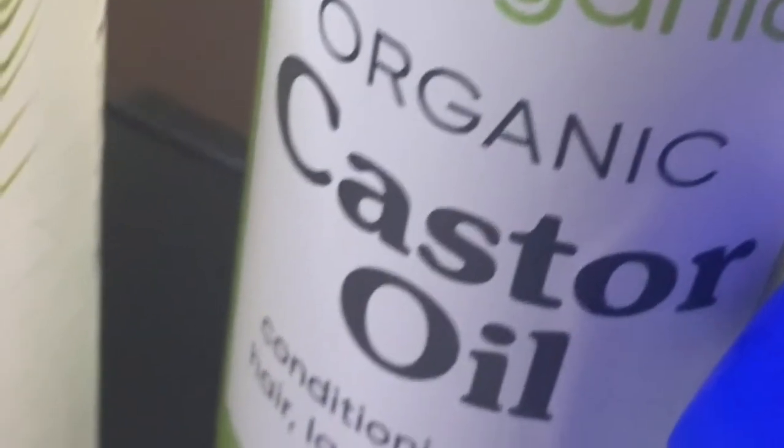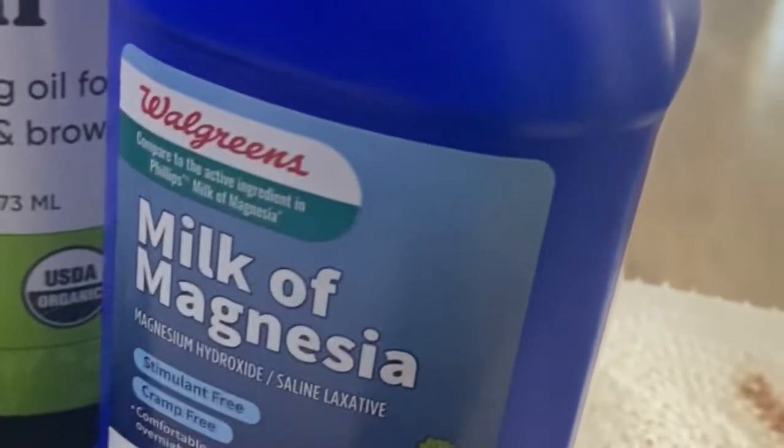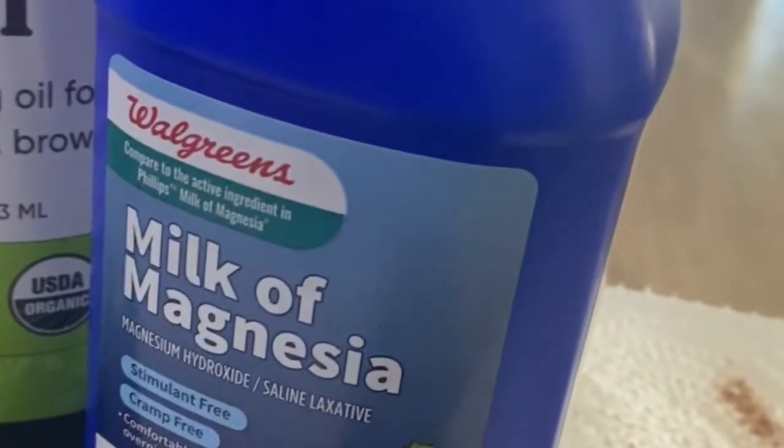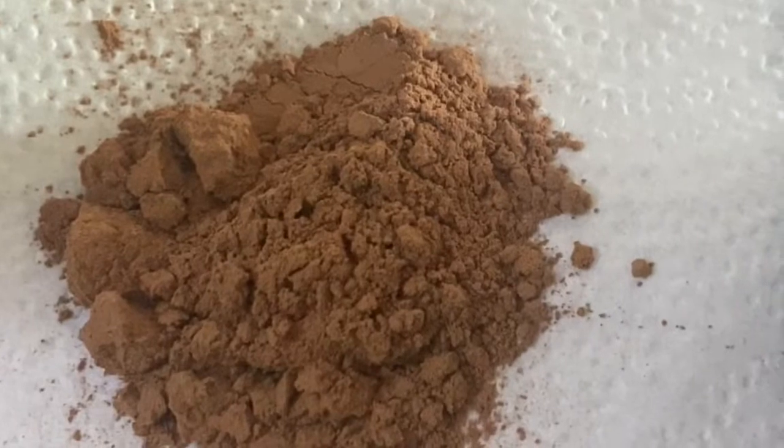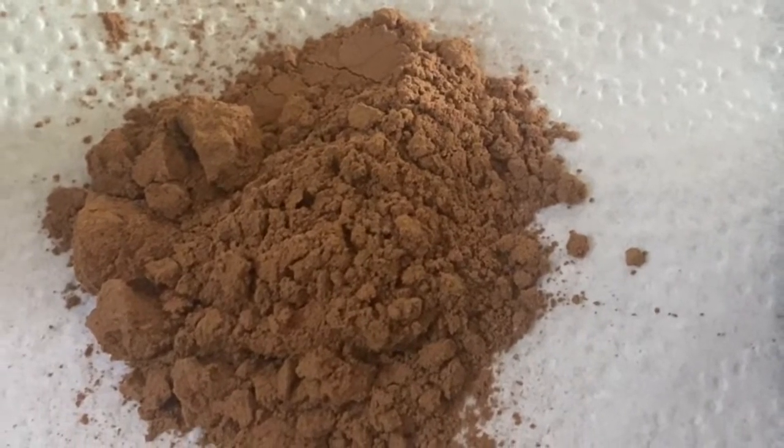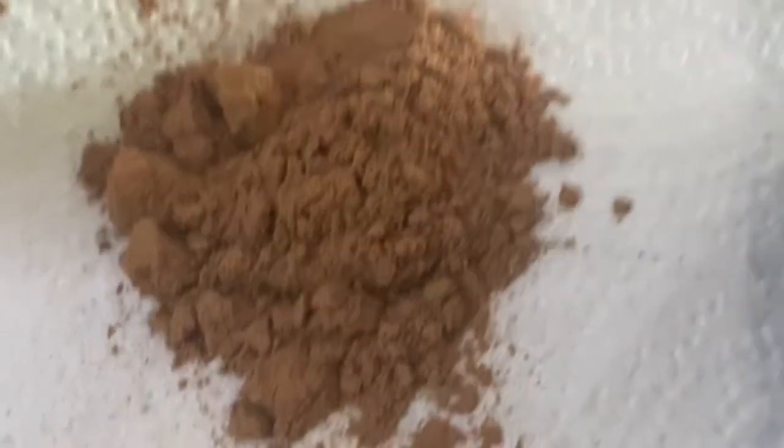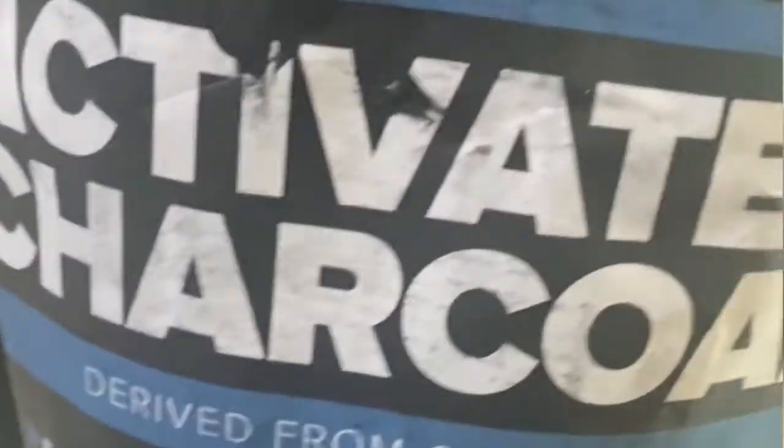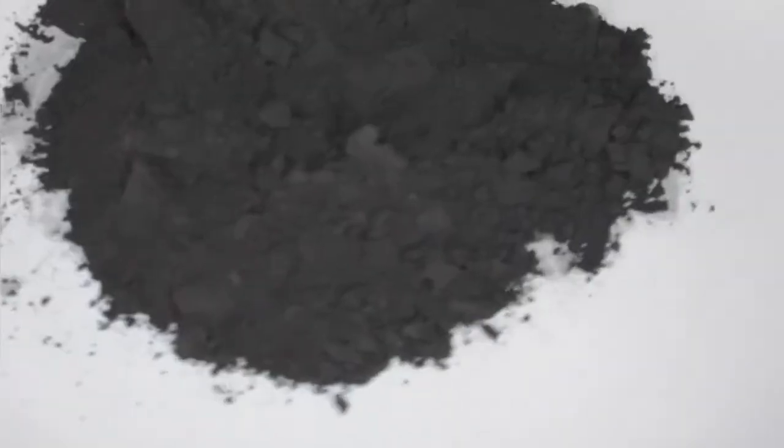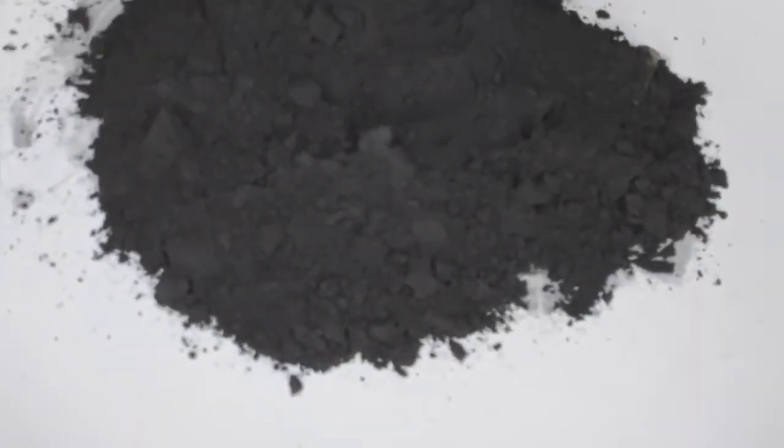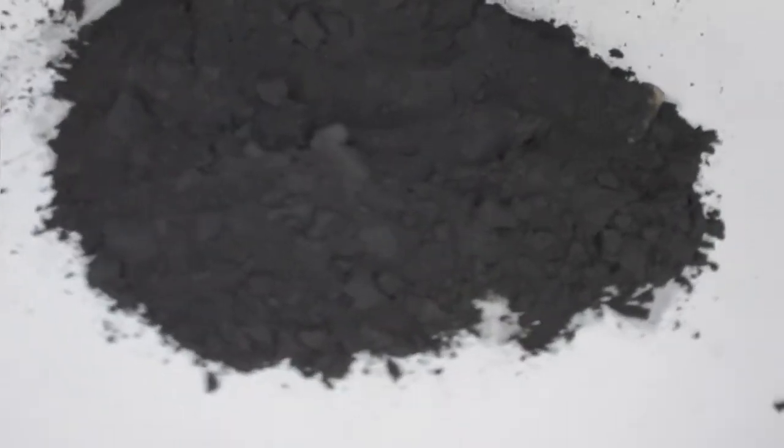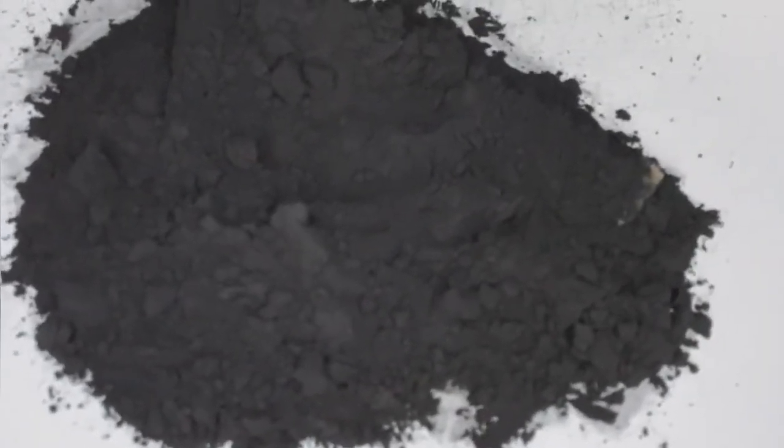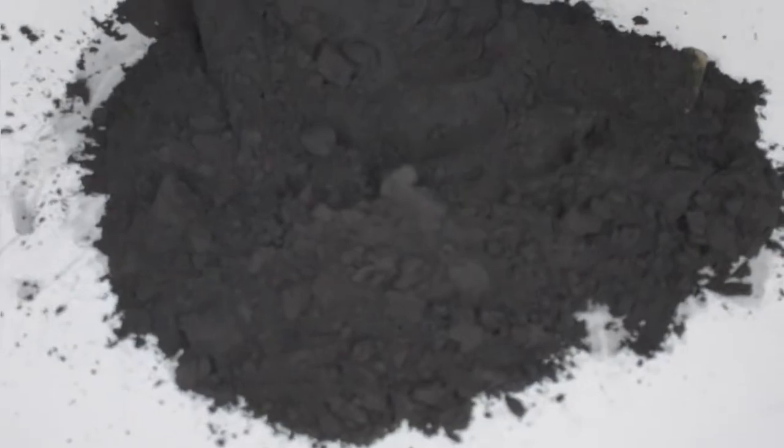Milk of magnesia keeps the pomade from looking oily. Cacao lessens the intensity of the charcoal's darkness. I'm using activated charcoal because I want a black brow pomade, but if you want more of a brown look, add more cacao powder and less charcoal.